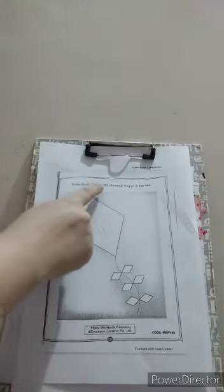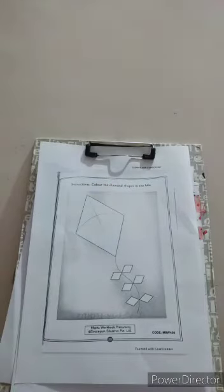So, what is the instruction given? Color the diamond shapes in the kite. You will have to color the diamond shapes in the kite. This is a diamond shape. So, let us color.